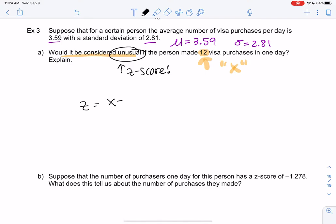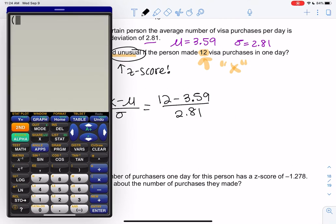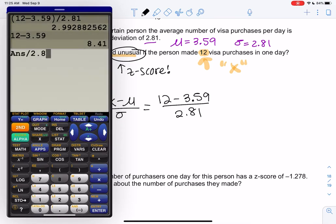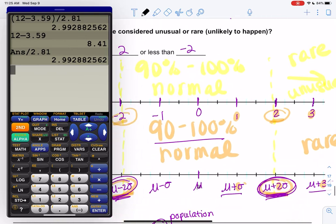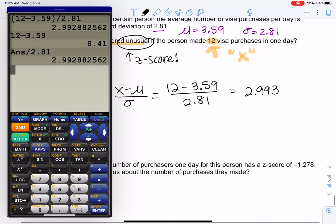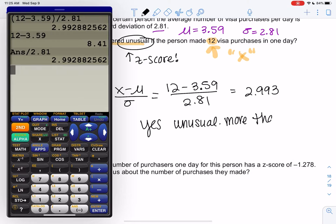We're going to take the data value, take away the mean, and divide by standard deviation. So 12 minus 3.59 all over 2.81. Add parentheses or do it in two steps. I got 2.99, which rounds up to 3. Is this considered unusual? Yes, it would be unusual, more than two standard deviations from the mean.